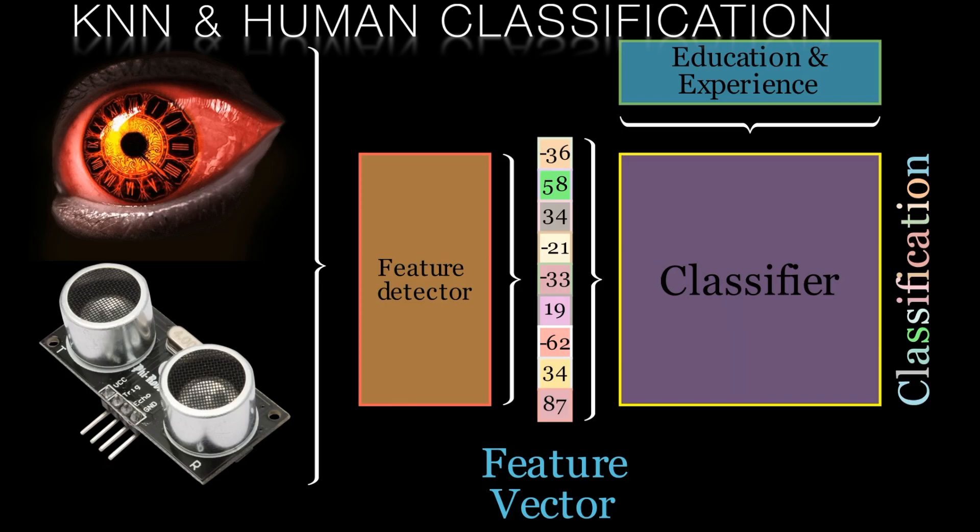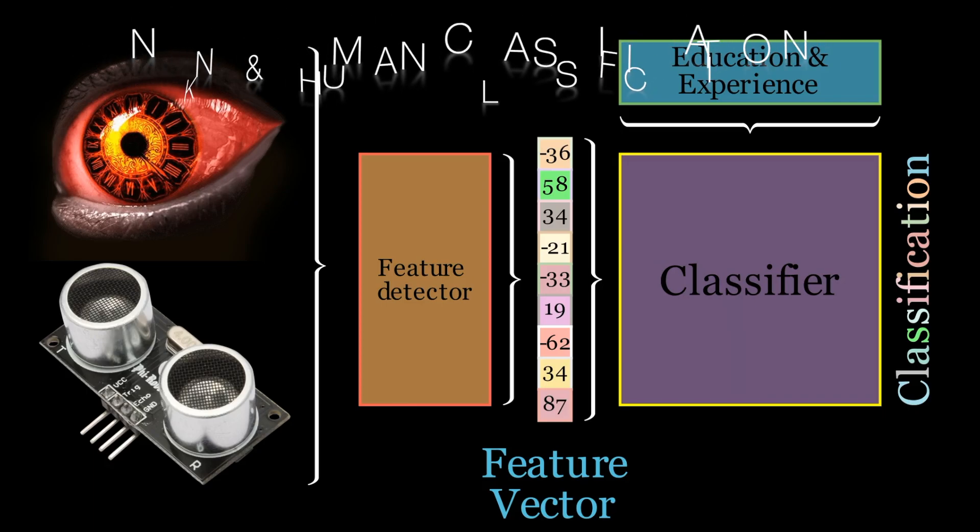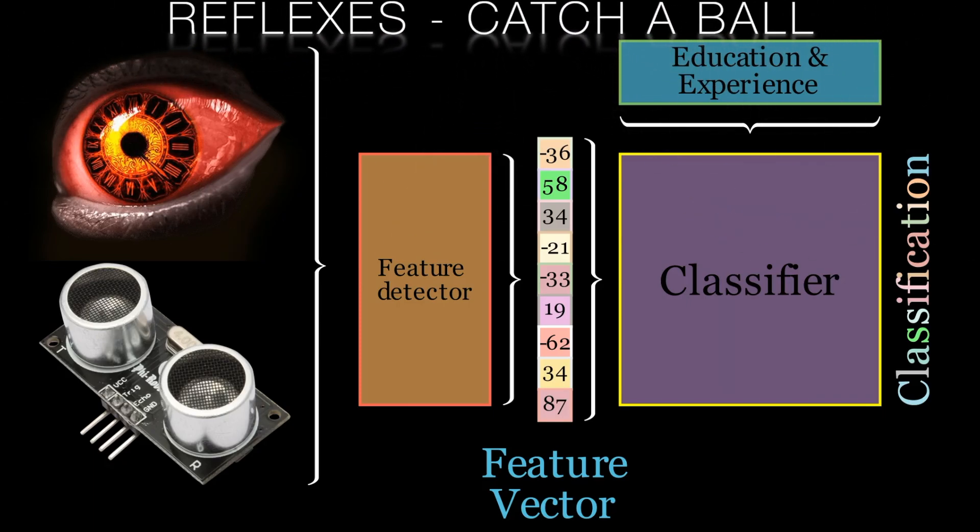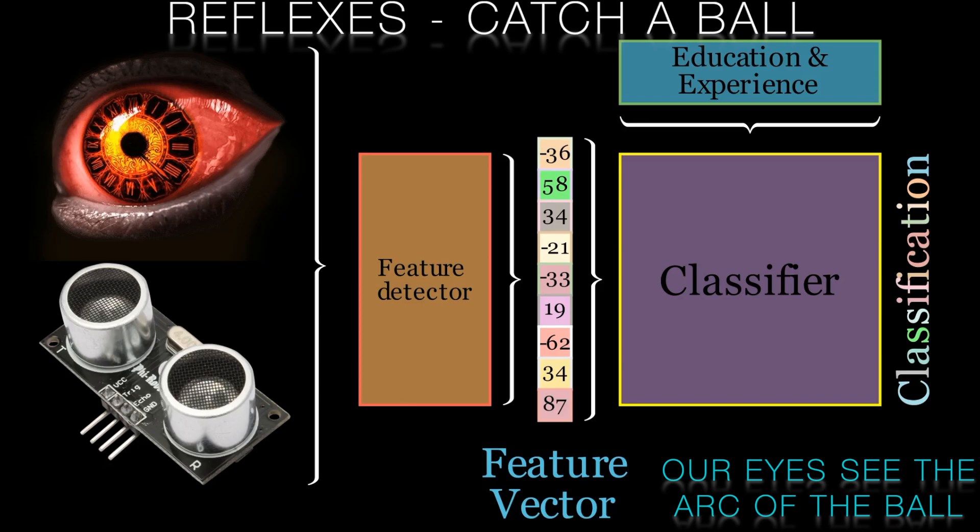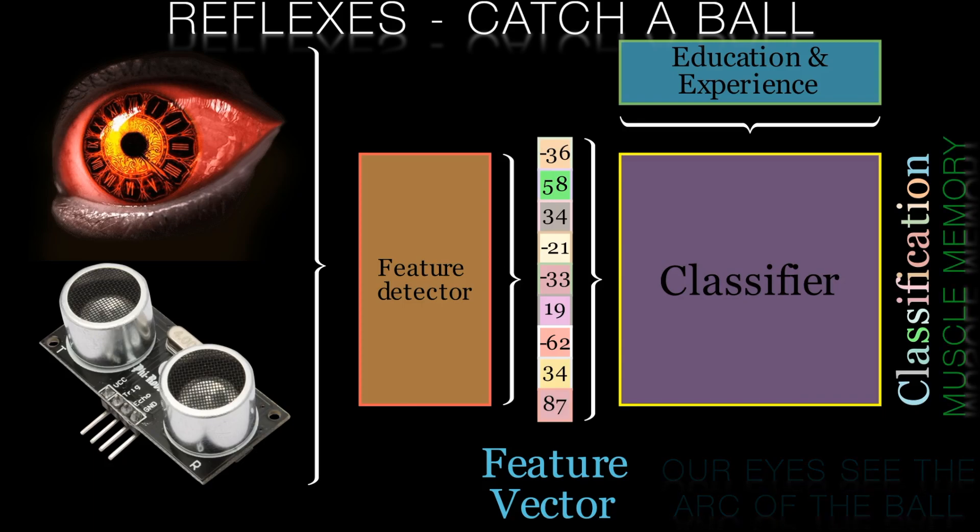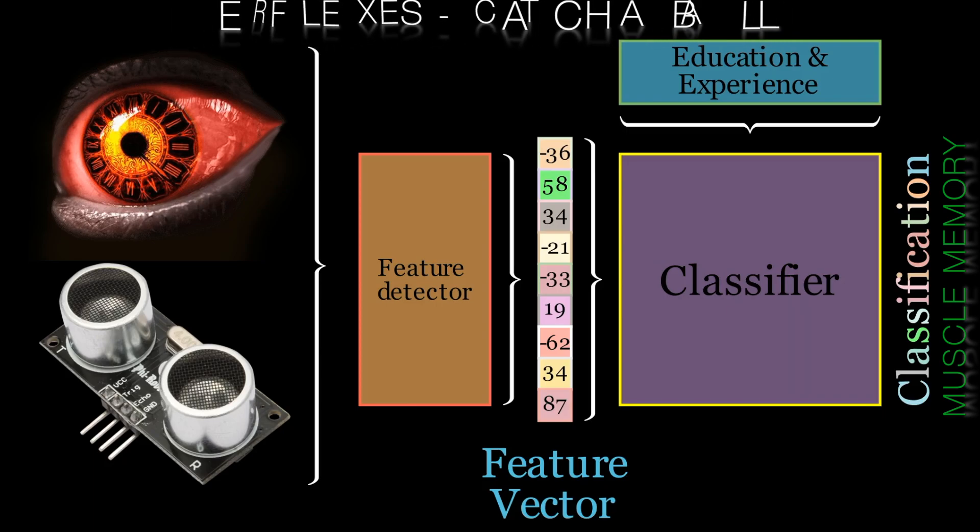This diagram is a general formulation and could be applied to anything we've learned, from very reflexive to highly cerebral. For instance, we've learned to do things like catch a moving ball. So the feature vector would be what our brain sees as the ball is traveling towards us, and the classification would be the patterns of muscle tension and relaxation needed to catch the moving ball.